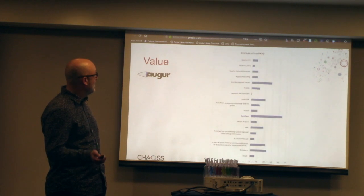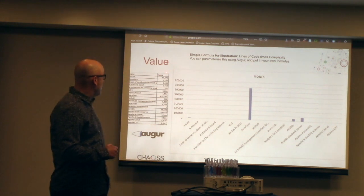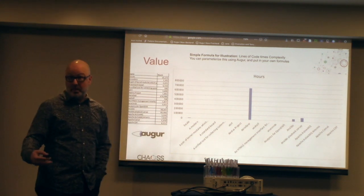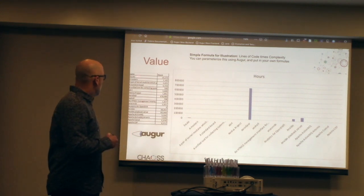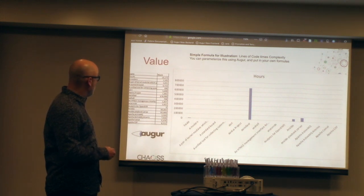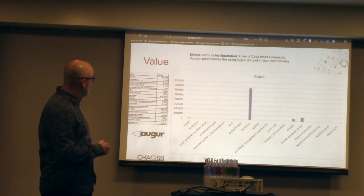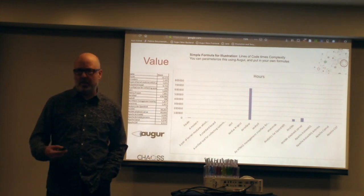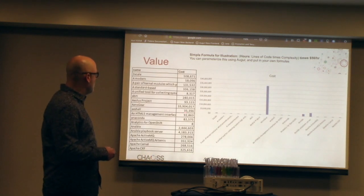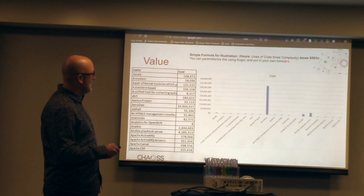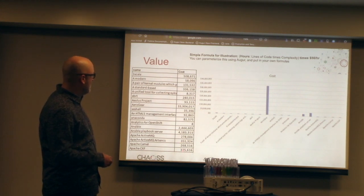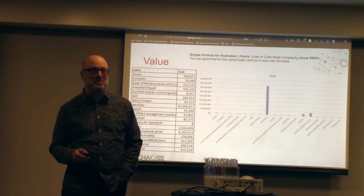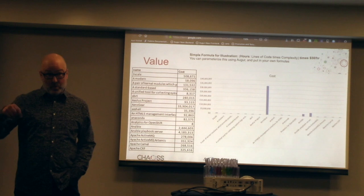Complexity can be useful when estimating the cost of building something. In this example, we take lines of code times complexity to estimate hours — it's a very simplified algorithm just for illustration. By complexity times lines of code you can get an estimated number of hours. Arrow Gear, with high complexity and high lines of code, skews the hours up — so I'd be skeptical and look into what is complex inside that package. Taking hours times $50/hour gives an approximate estimate of what it might cost to rebuild the software.